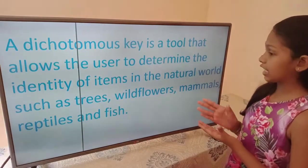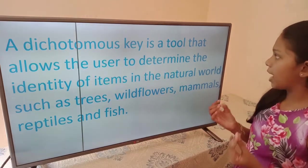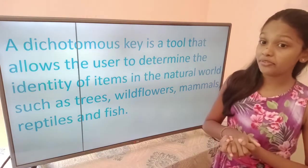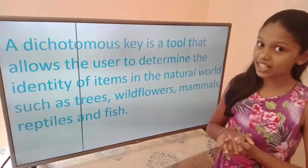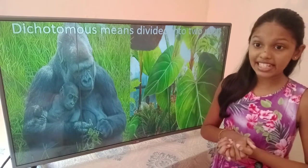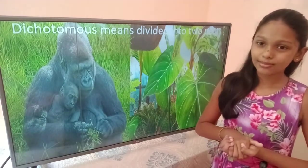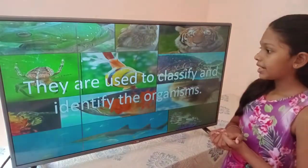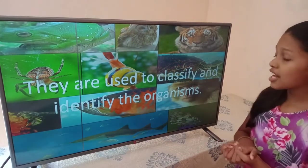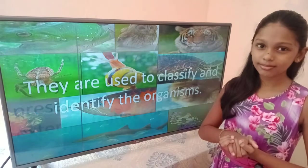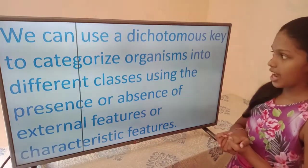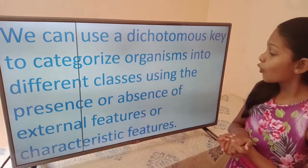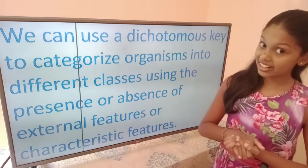A dichotomous key is a tool that allows the user to determine the identity of items in the natural world, such as trees, white flowers, mammals, reptiles and fish. Dichotomous key means divided into two parts. The most important use of the dichotomous key is that they are used to classify and identify organisms. We can use dichotomous keys to categorize organisms into different classes using the presence or absence of external features or characteristic features.